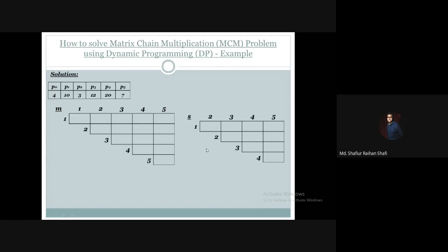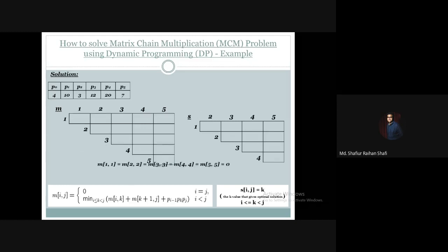Now let's fill up the M table and S table. We will calculate Mij and Sij values. First, the M table diagonal elements are initialized to 0: M11, M22, M33, M44, and M55 are all filled with 0.